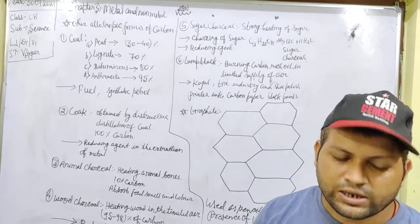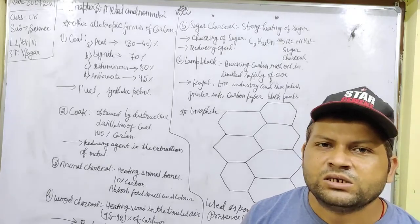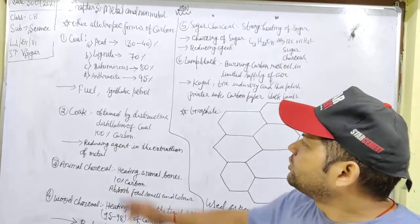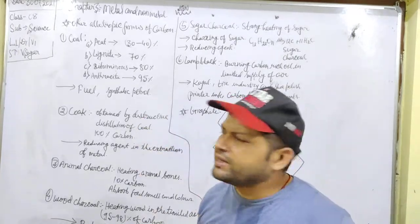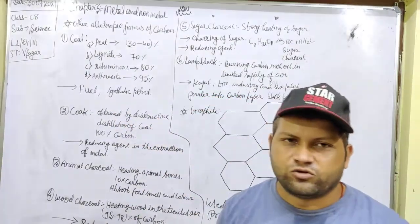Anthracite contains 95% of carbon. And the usage of coal is, it is used as a fuel and in the manufacturing of synthetic petrol. So, here I have written it, it is used as a fuel and synthetic petrol.